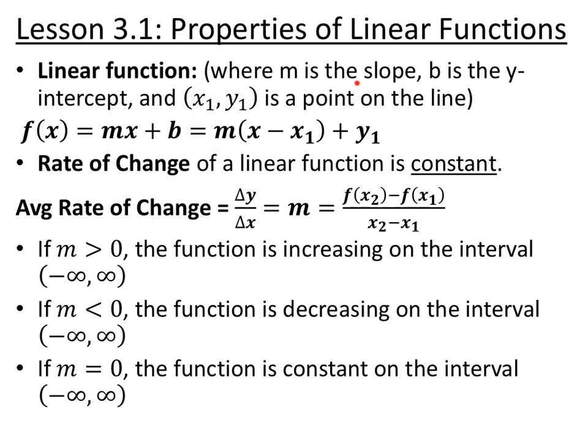And then a type of point-slope form. We just move the y1 over with everything else. Rate of change, or slope, is always constant. This is just how you find average rate of change. Change in y over change in x, this is the slope formula.